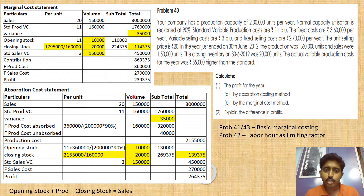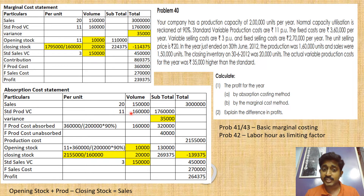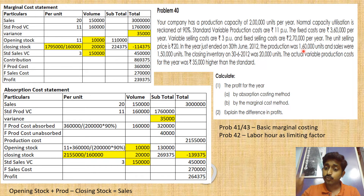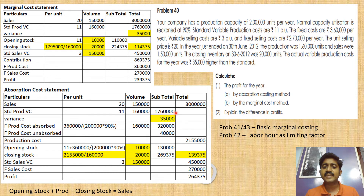Sales: selling price is 20 rupees, and sales quantity is 1,50,000 units, so sales revenue is 30 lakh rupees. Next, standard variable production cost is 11 rupees per unit. Many students use the sales quantity here, but we must use the production quantity — 1,60,000 units — because that is what has been issued from stores and produced. So 11 rupees × 1,60,000 = 17,60,000 as the standard variable cost.